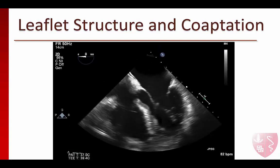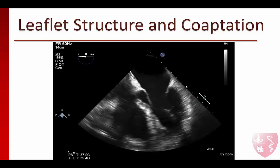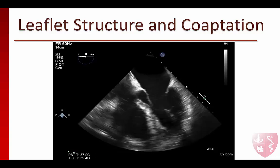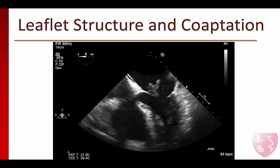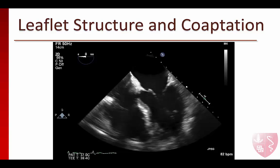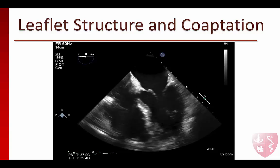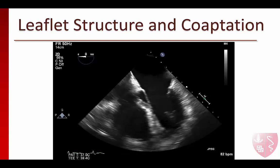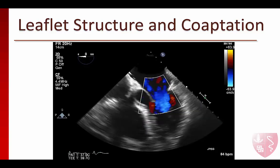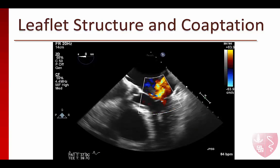Here is another example of pathologic leaflet structure and coaptation. This is a mid-esophageal four-chamber view of the heart. This patient had an inferior MI from an RCA infarct five days prior to this study. This echo was performed to evaluate profound hypotension and hypoxemia with pink froth coming from the endotracheal tube. The patient suffered a posteromedial papillary muscle rupture that led to acute severe mitral regurgitation. Here we see the posterior medial papillary muscle flailing up into the left atrium. Once color flow Doppler is placed over the valve, we see evidence of severe MR caused by gross valvular incompetence.